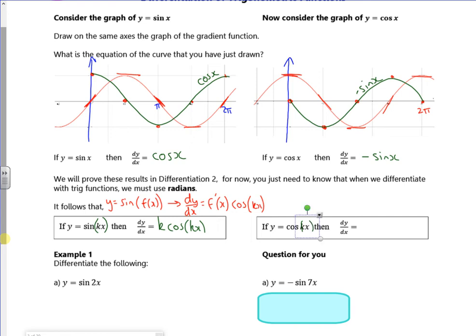So in a similar vein with the kx. I want the brackets in the right place. So if I differentiate cos of kx, I get minus k sin of kx. So in general, if I had the cos of a function, when I differentiate it, it goes to minus f dash of x, differentiating that function. The sine of the function is there.